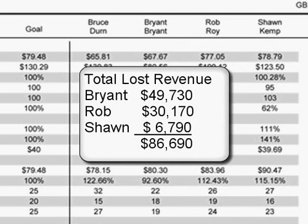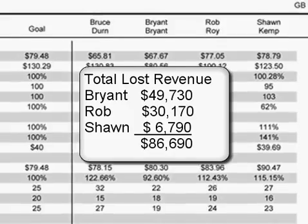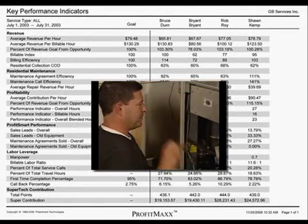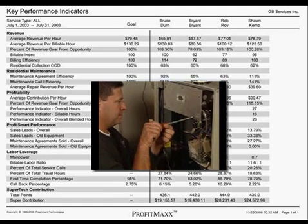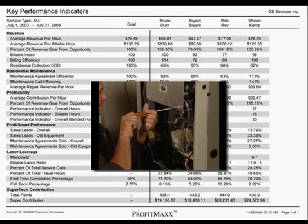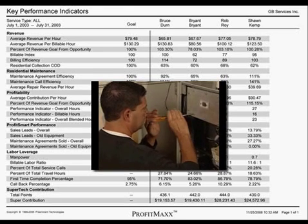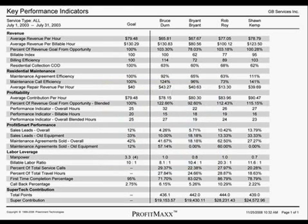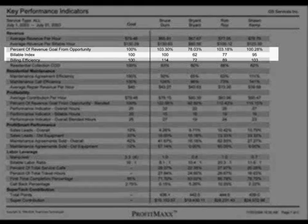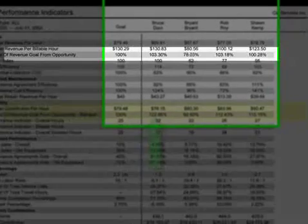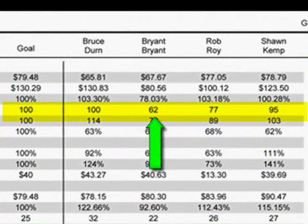Now that we know the impact to our company, we need to determine a cause so we can fix it. One thing that can impact this number is the pricing you have set for various repairs. For example, if you run a special price for a cleaning check or a tune-up, that will impact the revenue per billable hour — the tech doesn't have control over the price being charged to the customer. The first place I would look is KPI number four, the billable index. This is an indicator of how well the tech understands your billing format when running demand service calls and tune-ups combined. Bryant is at 62% of what we would expect him to be bringing in.